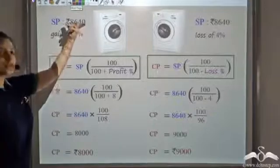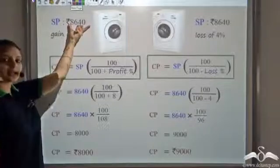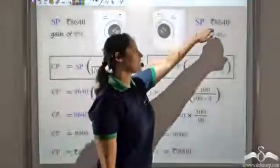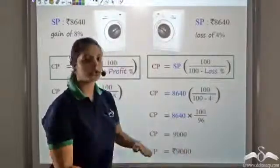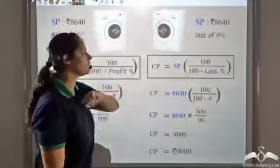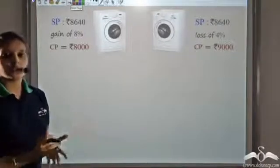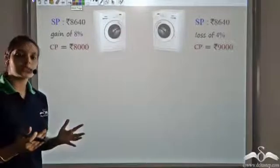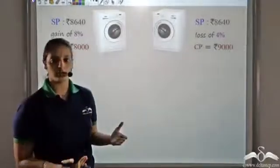For the first machine, selling price was ₹8640 and cost price is ₹8000. Since selling price is more than the cost price, we have a profit. For the second machine, selling price is ₹8640 and cost price is ₹9000. Since the cost price is greater than the selling price, we have a loss of 4 percent. Now we want to find the total loss or gain percent, so we need to find the total cost price and total selling price.